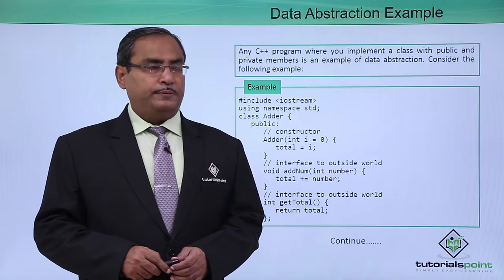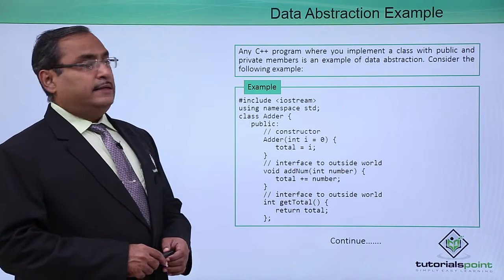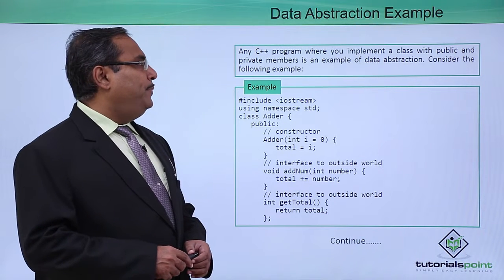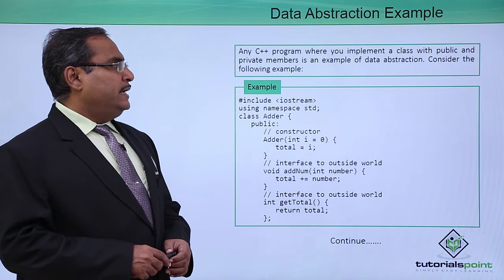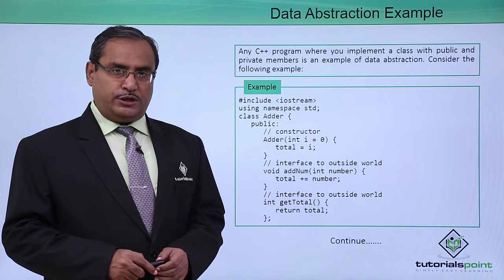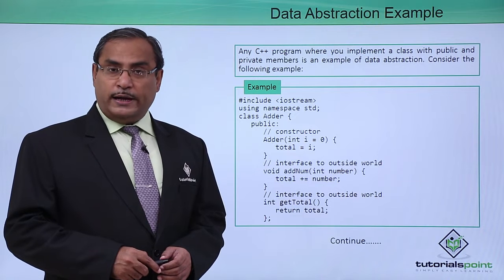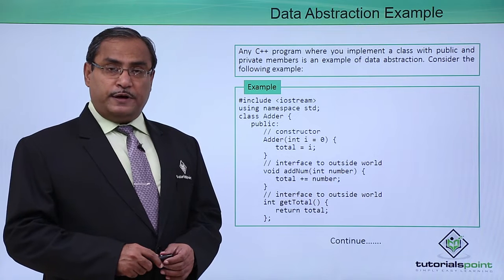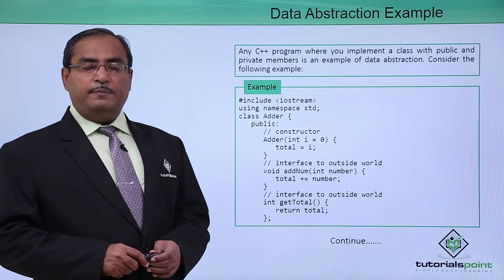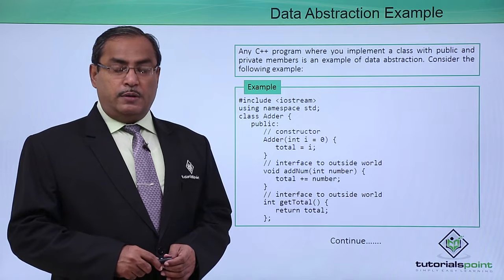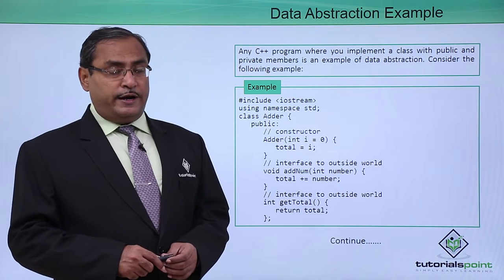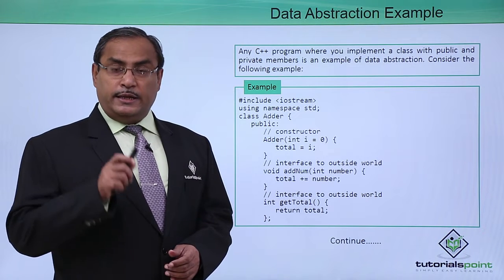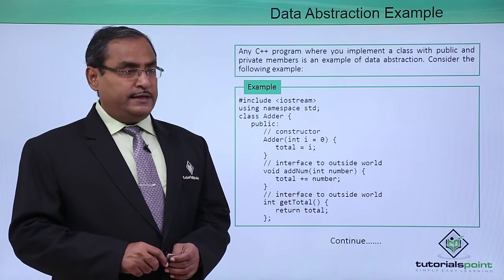Data abstraction example. In any C++ program where you implement a class with public and private members is an example of data abstraction. All member variables and member functions defined under the public section are accessible from the outside world, but those members defined under the private section are not accessible from the outside world — they are accessible only from within the class itself.